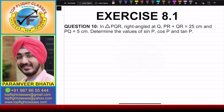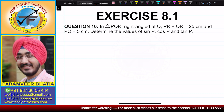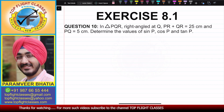In this video, we are going to solve question number 10 of exercise 8.1. Question number 10 says: in triangle PQR, right-angled at Q, PR plus QR is equal to 25 cm and PQ is equal to 5 cm. Determine the values of sin P, cos P, and tan P.